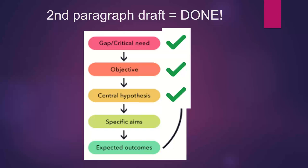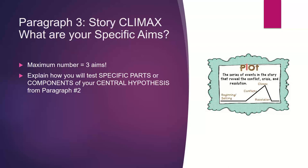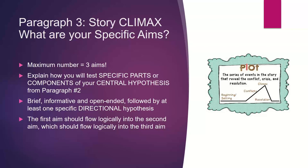Now we get into the specific aims — this is the story climax. I would do a maximum of three aims; for a K, two is plenty, but your primary mentor might have something to say about that. Explain how you will test specific parts or components of your central hypothesis from paragraph two. Make each aim brief, informative, and open-ended, followed by at least one specific directional hypothesis. The first aim should flow logically into the second, which flows into the third, but no aim should be dependent on the outcome of a previous aim.